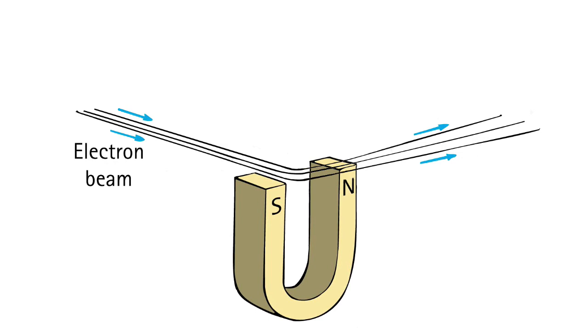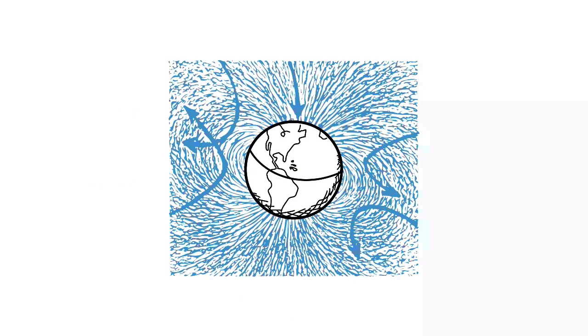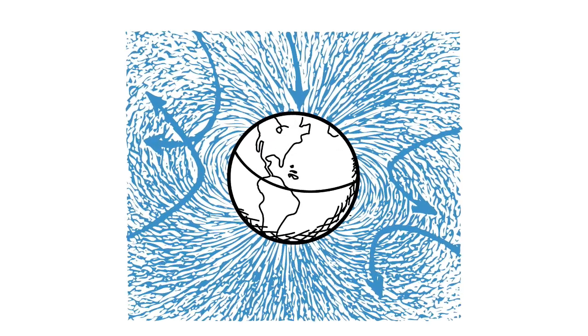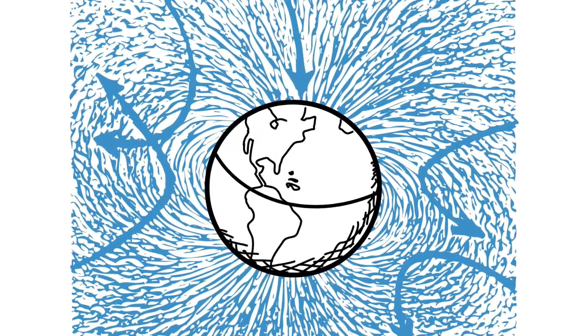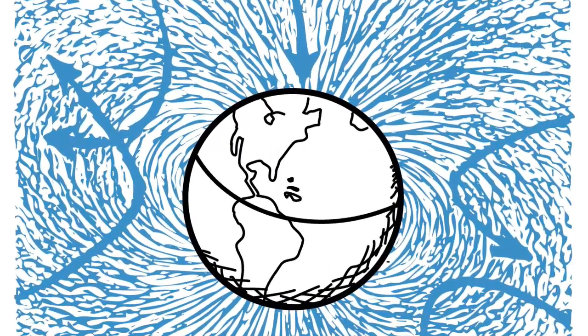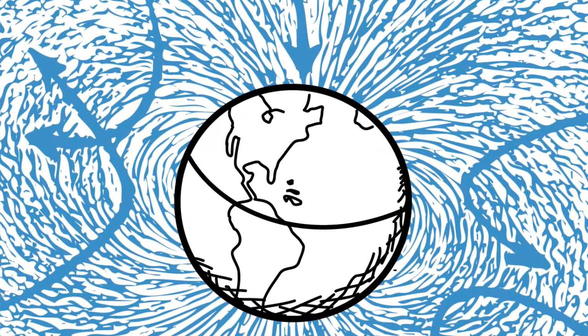Charged particles flying at us from outer space that pose a danger to Earth are likewise deflected by Earth's magnetic field. This deflection luckily protects us.